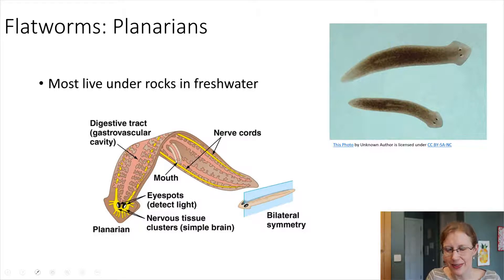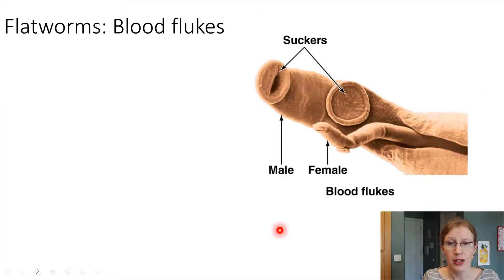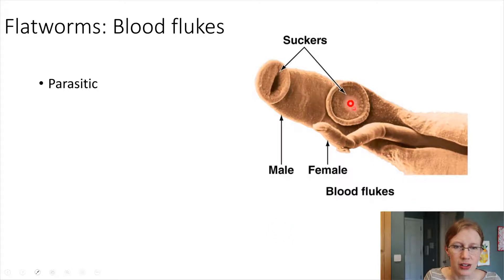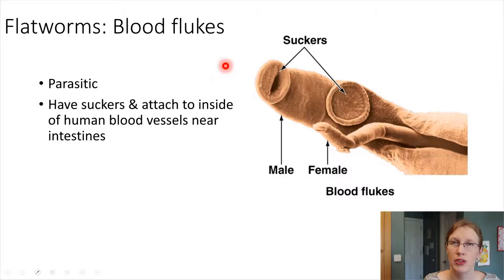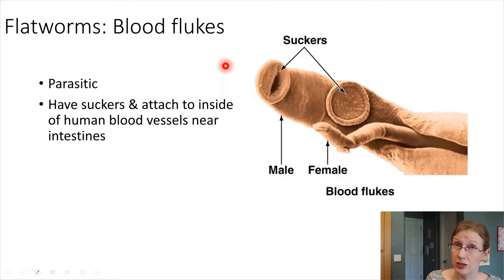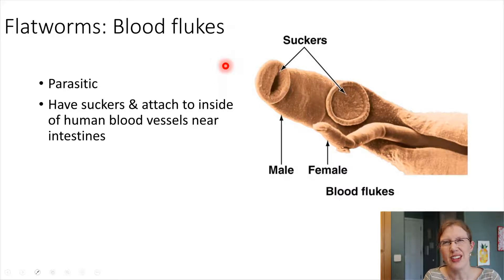Moving on to the next group, which is a little bit less pleasant: the blood flukes. Here's a picture of a blood fluke. Blood flukes are parasitic, and they have suckers that you can see in the picture. These suckers allow them to attach to the insides of human blood vessels. They tend to do this near the intestines, and the reason for that is because they're trying to take the nutrients that the intestines absorb from food.